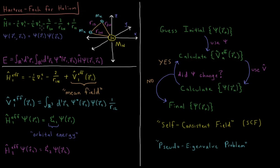The Hamiltonian also includes minus two over r1n, the attraction of electron one to the nucleus, minus two over r2n, the attraction of electron two to the nucleus, and plus one over r12, the repulsion of the electrons from one another.